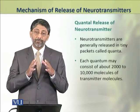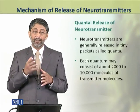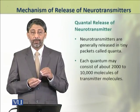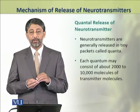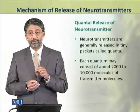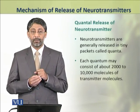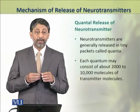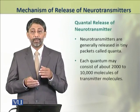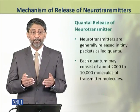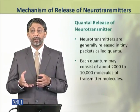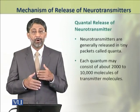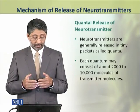Neurotransmitters are generally released as packets which contain about 2,000 to 10,000 molecules of neurotransmitter in them. This is known as quantal release, because we normally use the word 'quantum' for packets, so when one quantum is released, we call it quantal release.